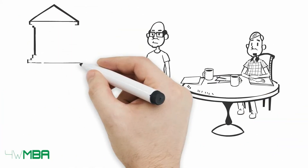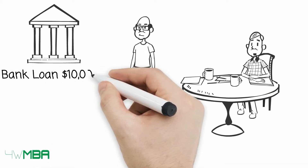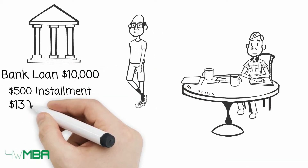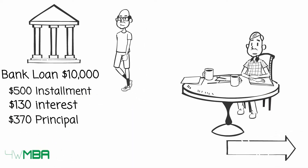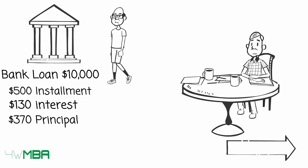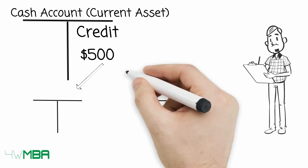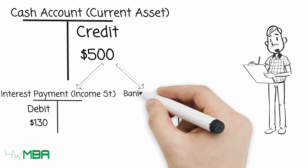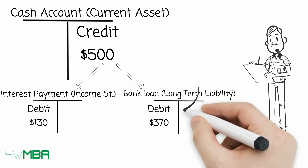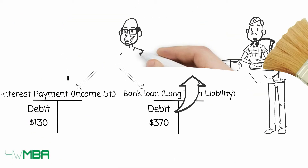Jim has a bank loan for $10,000. He pays the first loan installment of $500, of which $130 is interest and $370 is principal. Let's record this transaction. Due to cash outflow, we will credit the cash account, then debit the interest expense and debit the principal for $370. The final loan balance will be $9,630.